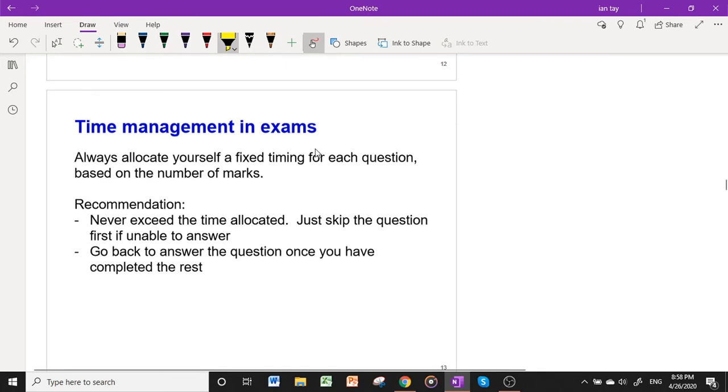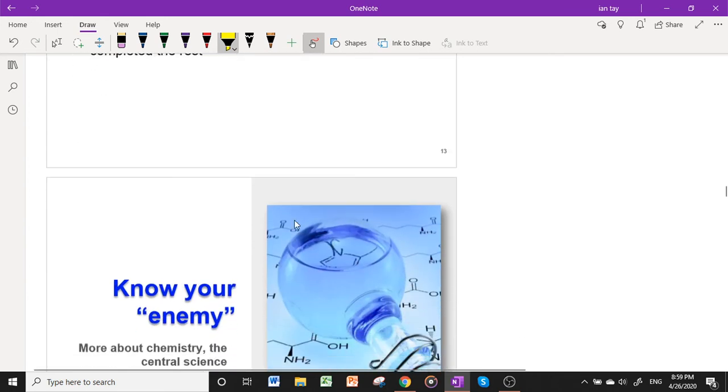In fact, always for Cambridge. Cambridge doesn't normally try to distract you by giving you red herrings. Most of the time, all the values they give you are useful. So try to combine some of the values together to create quantities that make sense. For example, mass over MR to give amount, and then try to progress from there. Even if you can't progress, don't cancel your steps out - you may just get some partial credit. So lastly, time management in exams. Cambridge is sometimes very generous in time. Sometimes it can be very stingy with time, but they are always pretty fair. So always allocate yourself a fixed timing for each question based on the number of marks, the total marks of the paper and the total amount of time. The recommendation is that after you divide your time properly, don't exceed the time allocated. Just skip the question first if you're unable to answer. And once you've completed the test, do go back to try to answer that question. Why? Because many students get carried away by one difficult question that they cannot solve. And the question is just at most three or four marks. And because of that, they miss out on doing a lot of marks, a lot of easy marks at the end of the paper. So I think that is really a very big waste.